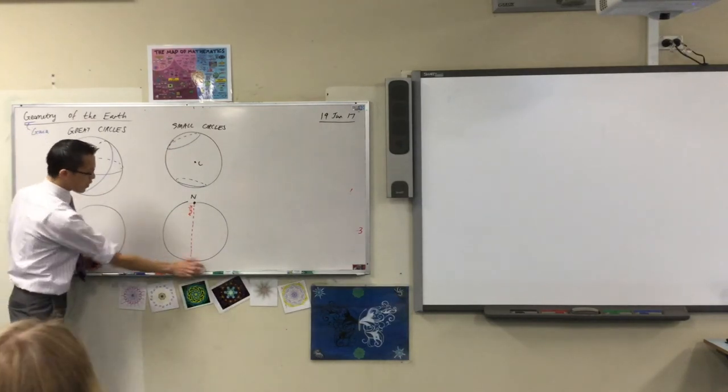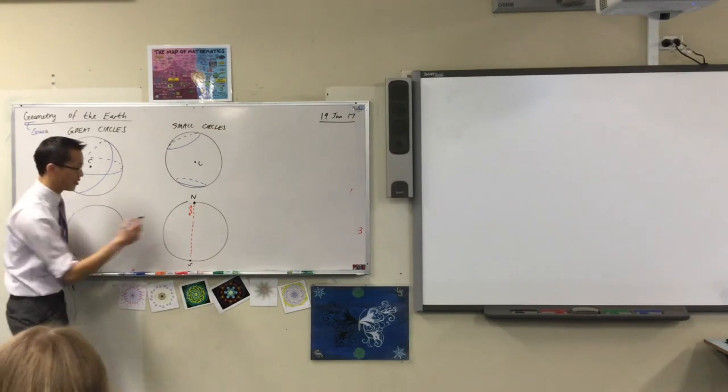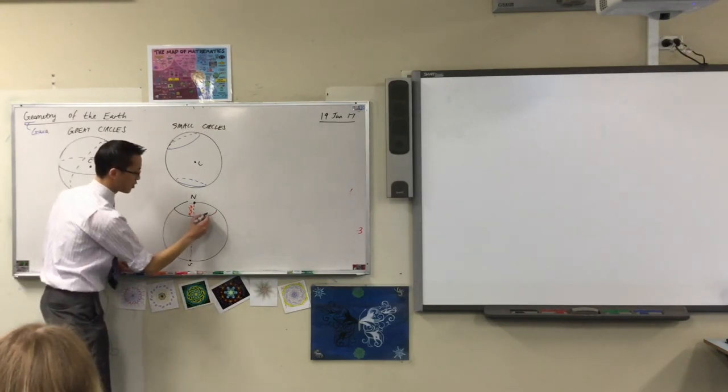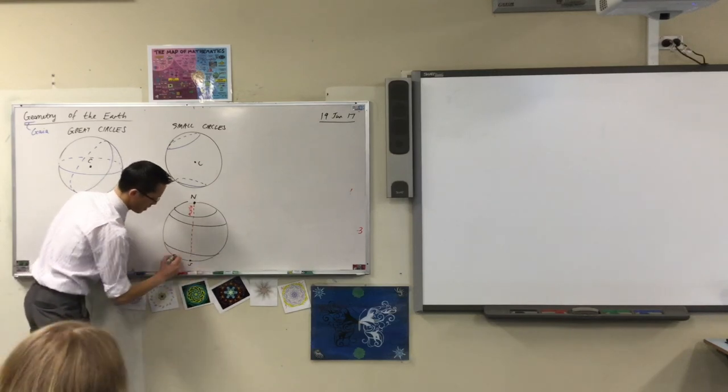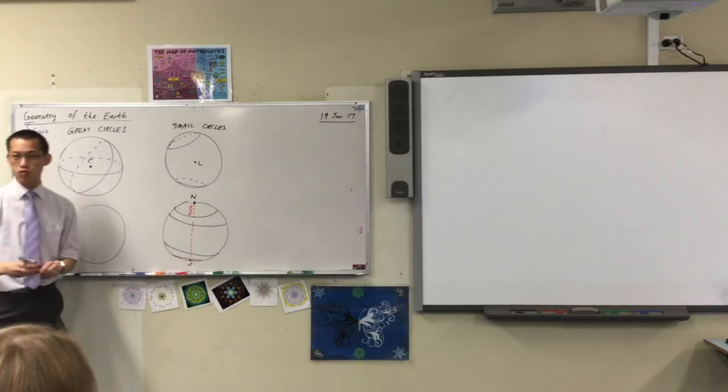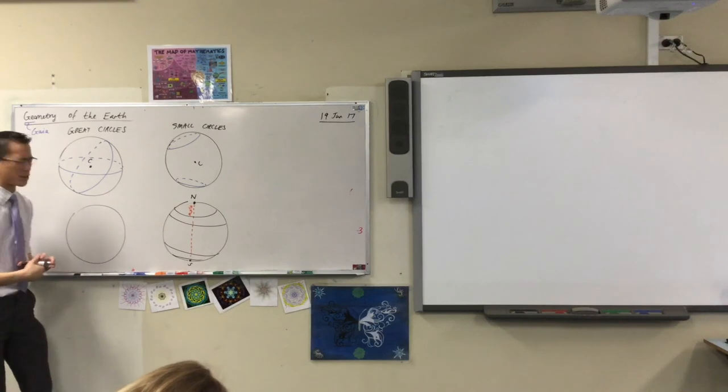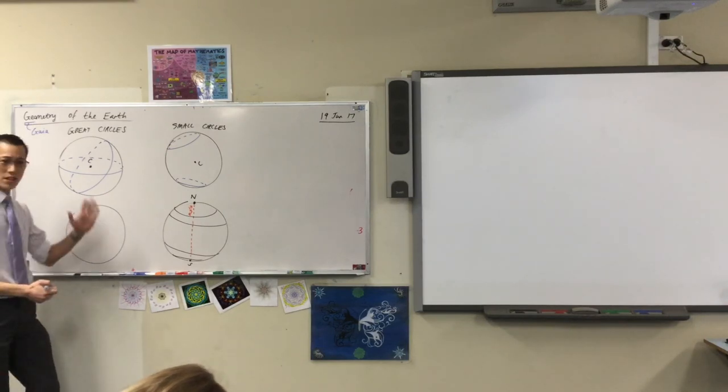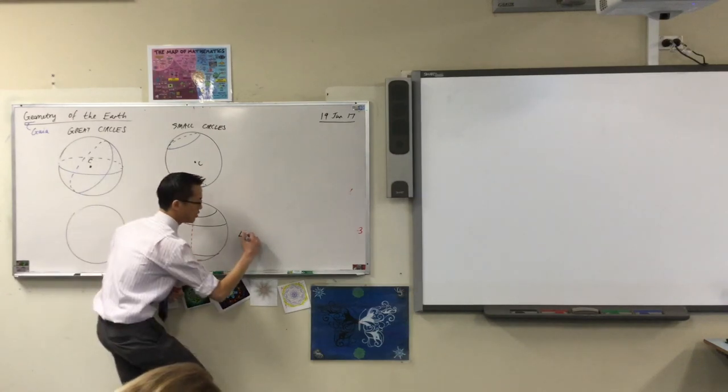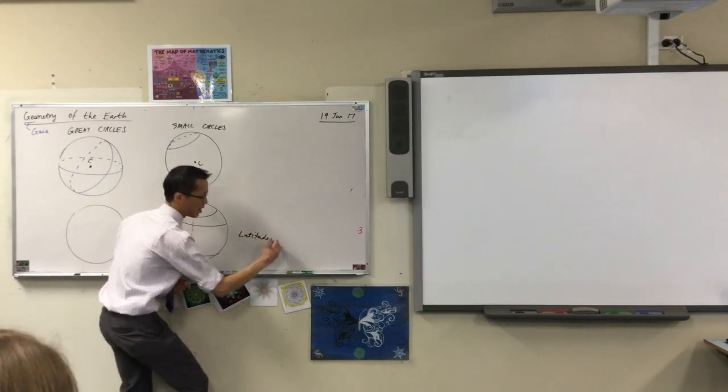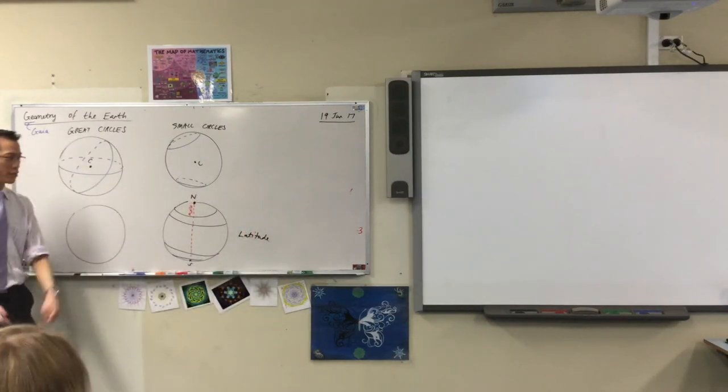If you cut the sphere so that you're perpendicular to this axis, you get a bunch of small circles, like this. And they cut across the circle. Sorry, they cut across the sphere. So because they cut across, we call these measurements of latitude. Because latitude, like lateral thinking, latitude literally means across.